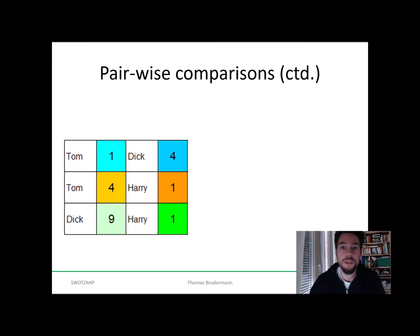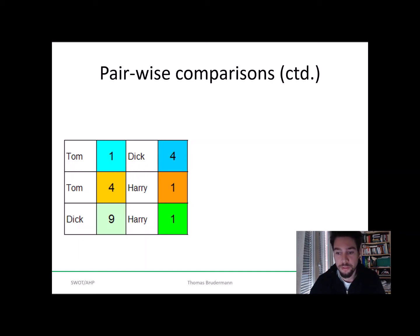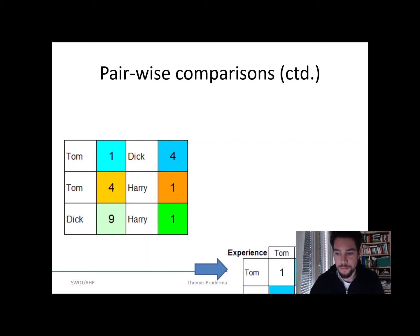Now we can do simple pairwise comparisons. For example, in terms of experience, we look at how Tom performs against Dick — the result is one to four, meaning Dick is better. But Tom wins four over one against Harry, so Tom is better than Harry in this regard. Dick outperforms Harry quite clearly with nine to one for the factor experience.